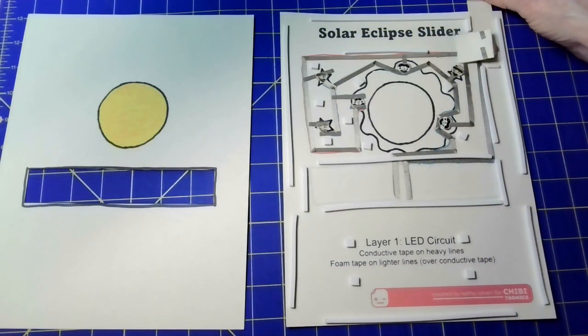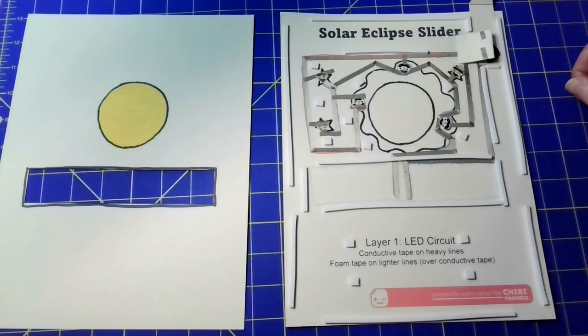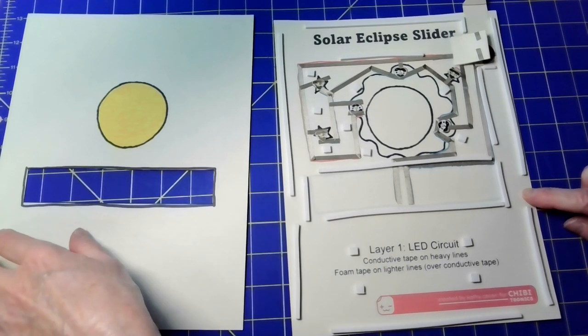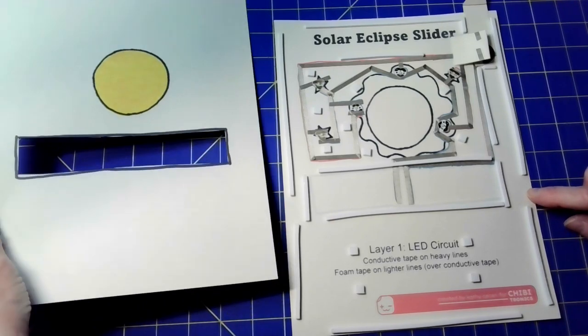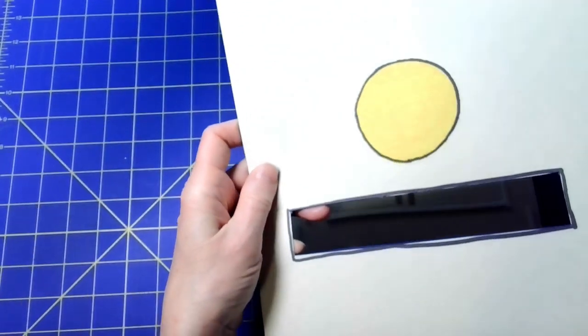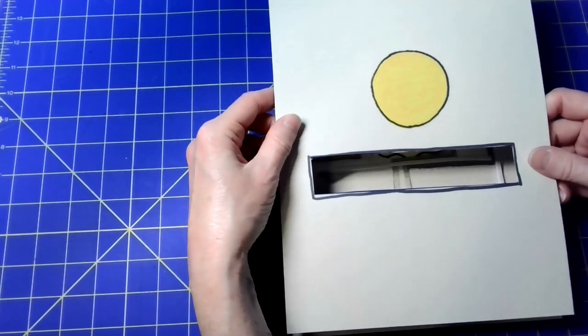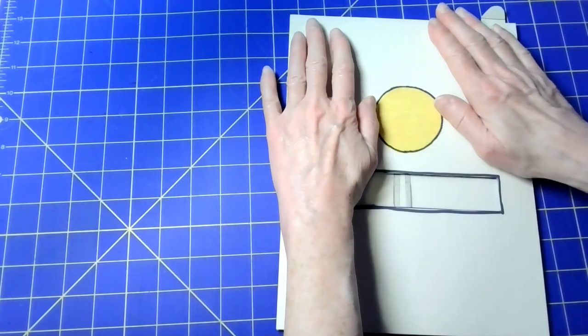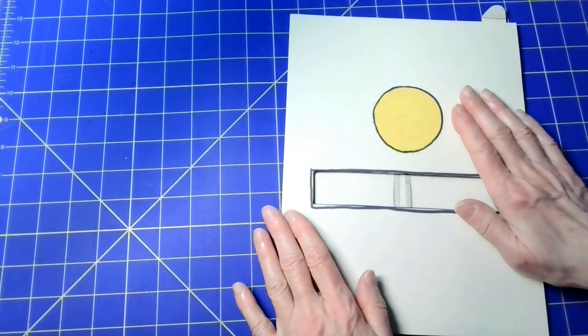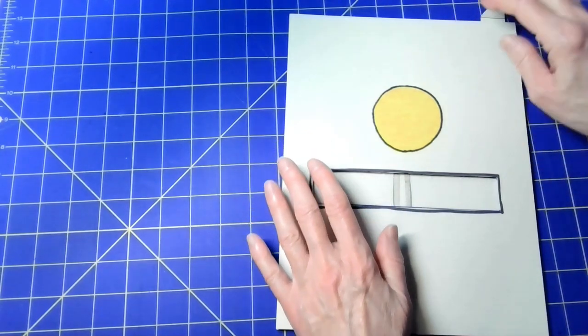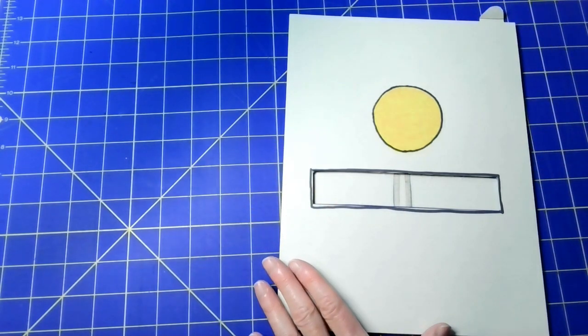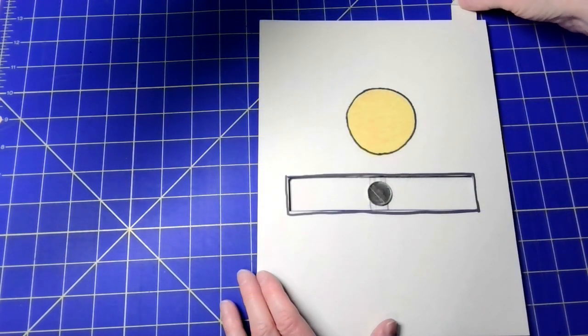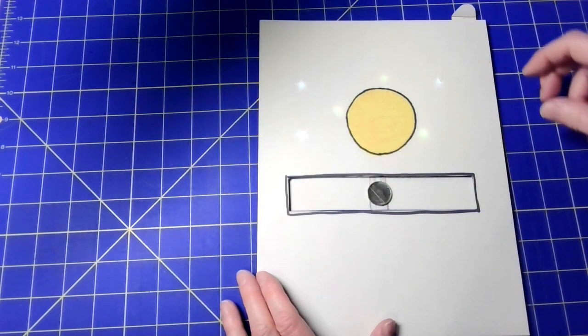With my makeshift battery tray all ready to go I've peeled off the protective layers of all of the foam tape as far as I can tell and now I'm going to very carefully line up the upper layer here and the bottom layer. Let's see if everything still lights up and my battery tray is working as well.